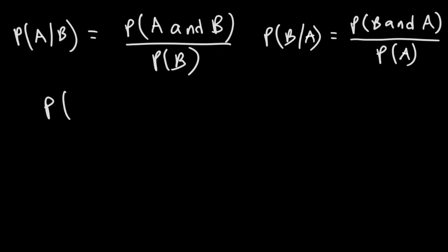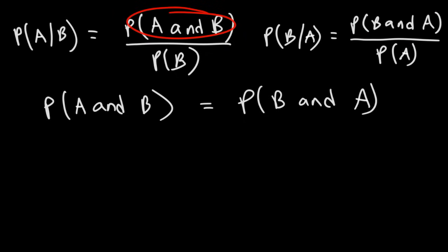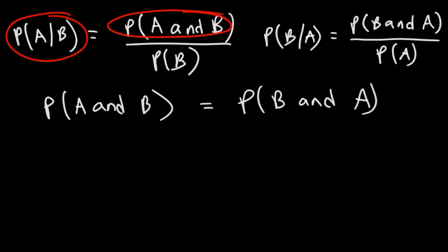Now the probability that event A and B will occur is equal to the probability that event B and A will occur. So basically, what I'm doing is setting these two equal to each other. This is equal to the probability of A given B, times the probability of B.